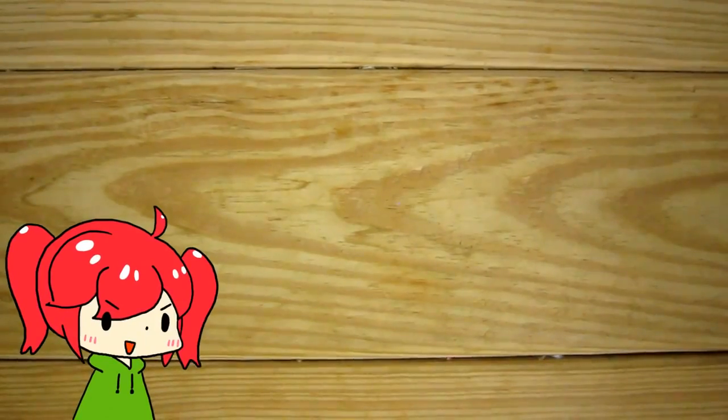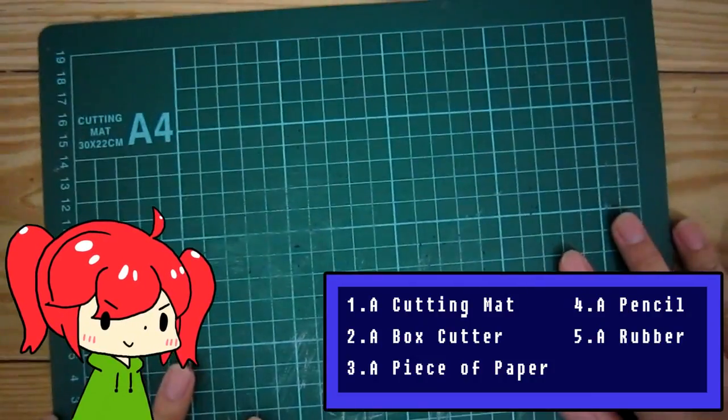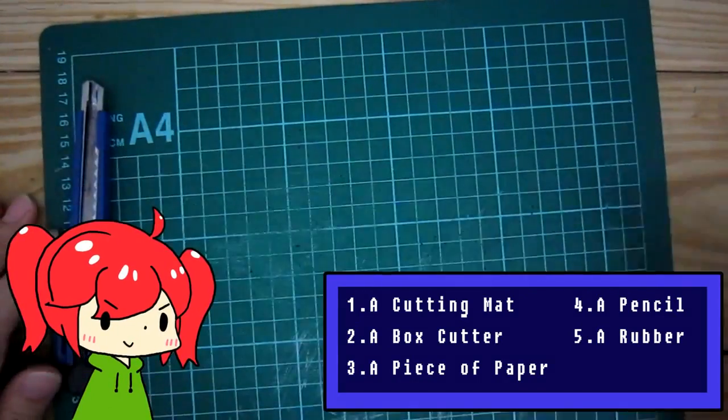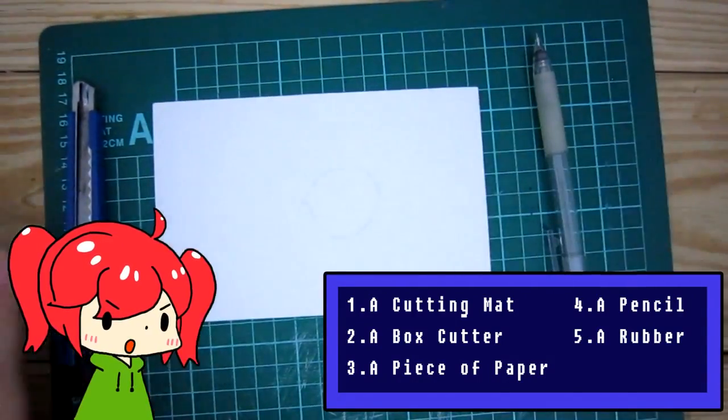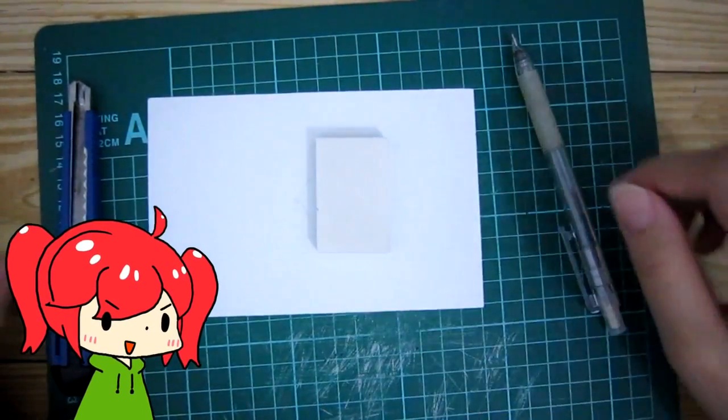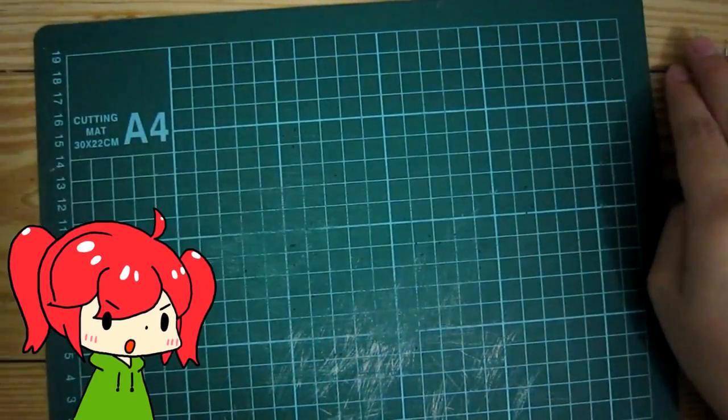Before carving the rubber stamps, you have to prepare a cutting mat, a box cutter, a piece of paper, a pencil, and the most important, a rubber. Now you have all the tools you need. We can start with step one.